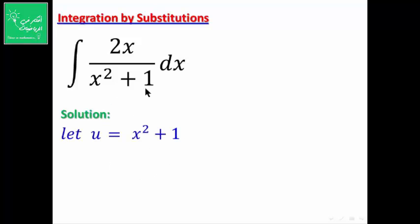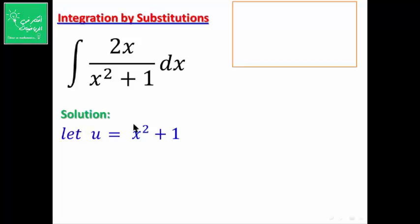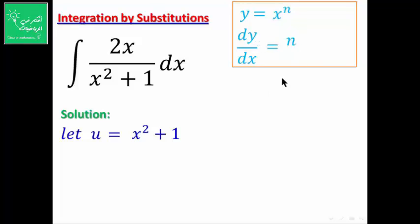Let u = x² + 1. يجب أن نشتق هذا الاقتران وننظر إذا كانت مشتقته موجودة في التكامل أو لها علاقة به. قاعدة الاشتقاق: إذا كان y = xⁿ فإن dy/dx = n · x^(n-1). نطبق هذا على u.